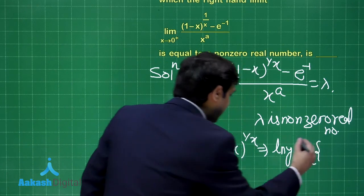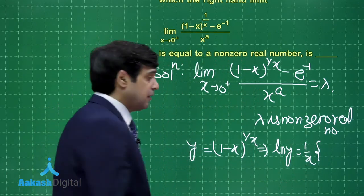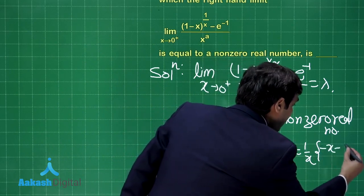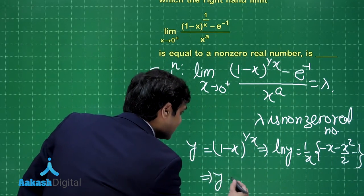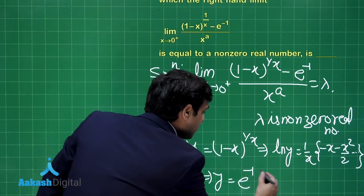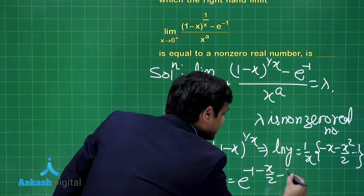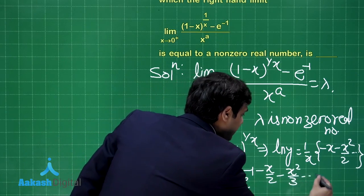Now if I consider this term, this term as 1 by x, taking log, we have log Y is equal to 1 by x multiplied with log 1 minus x, which can be expanded as minus x minus x square by 2 and so on.